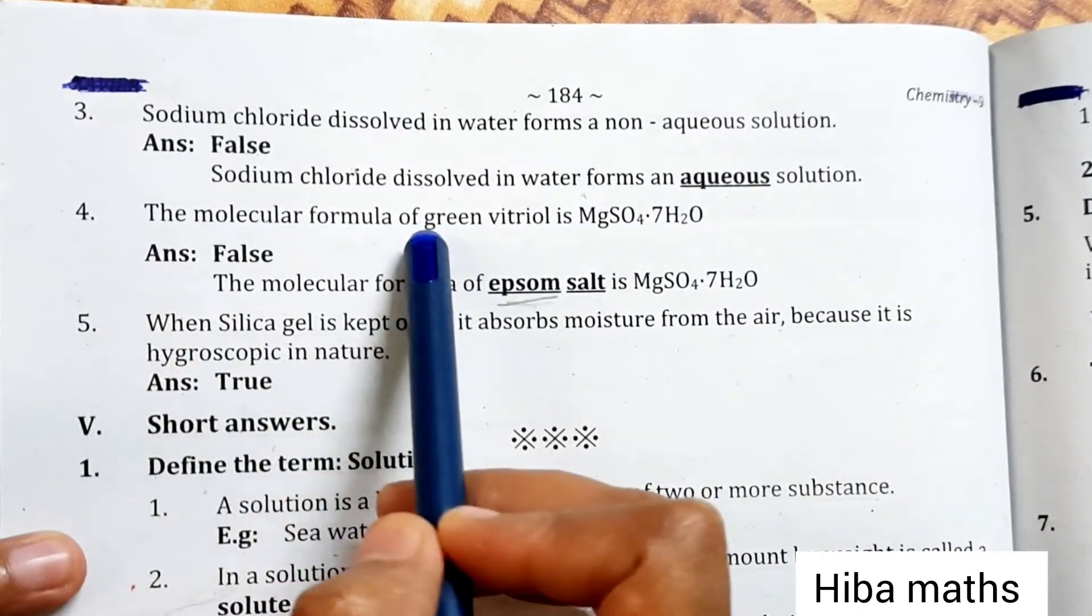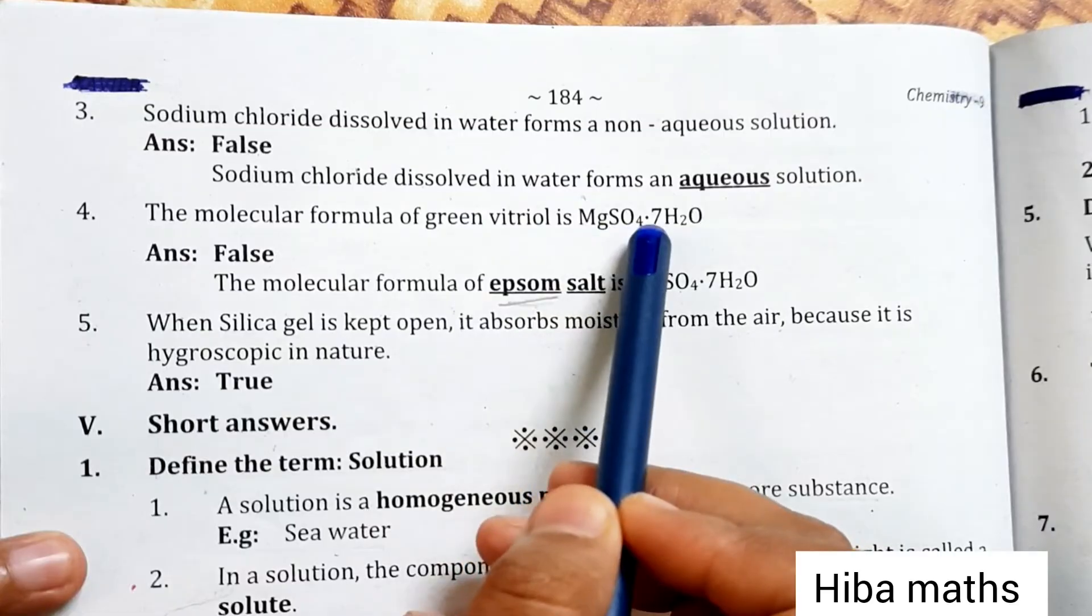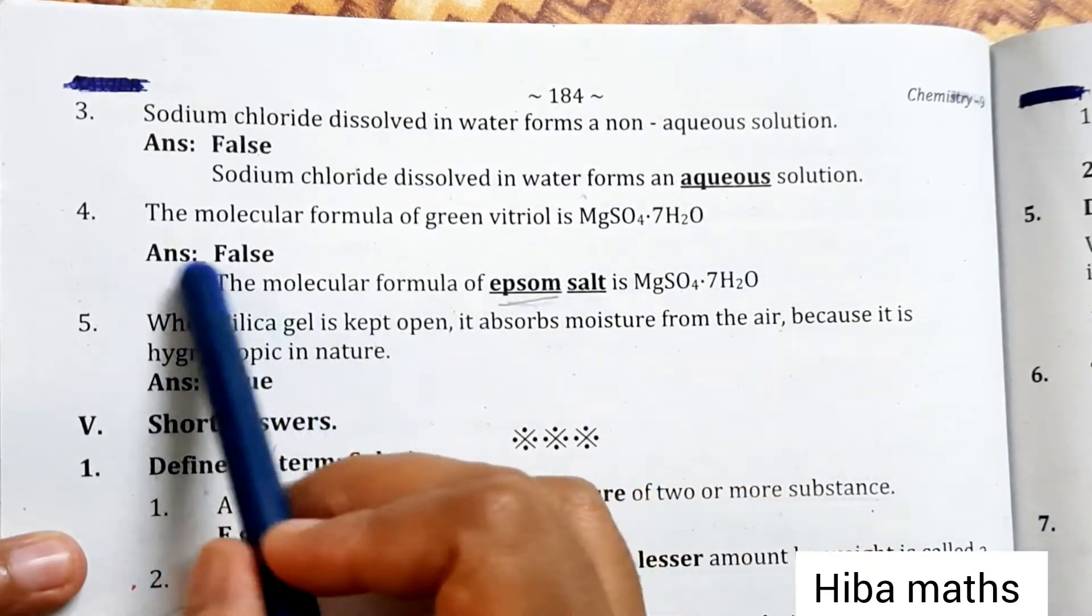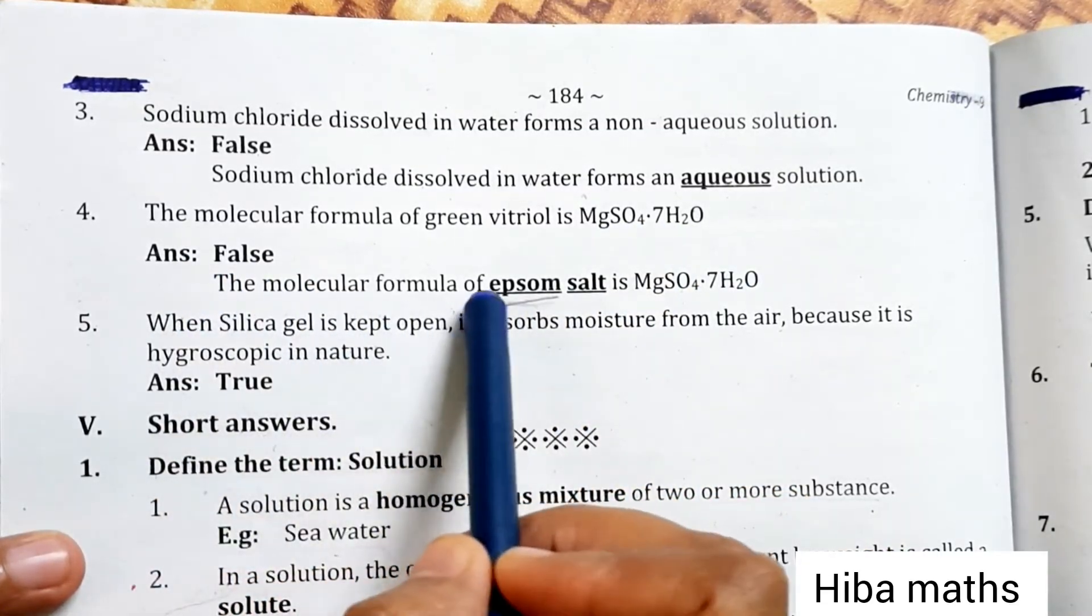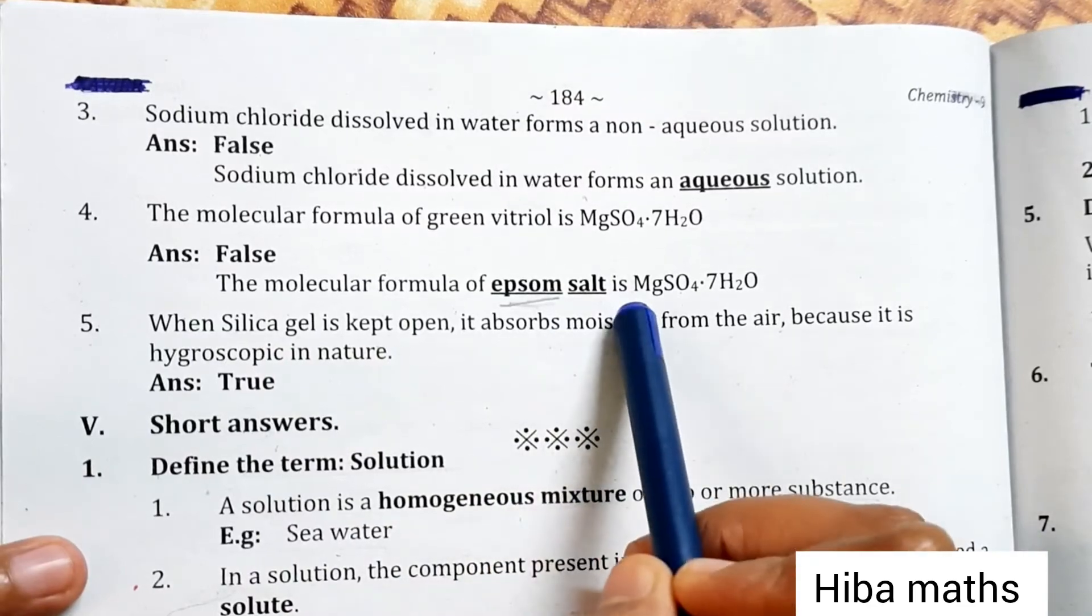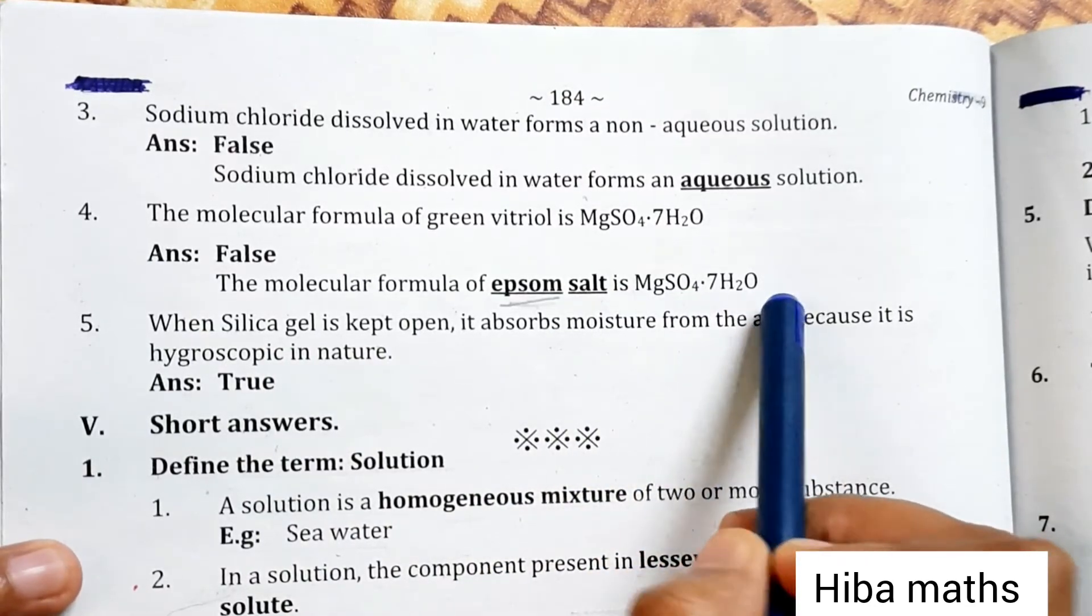The molecular formula of green vitriol is MgSO4·7H2O. False. The molecular formula of epsom salt is MgSO4·7H2O.